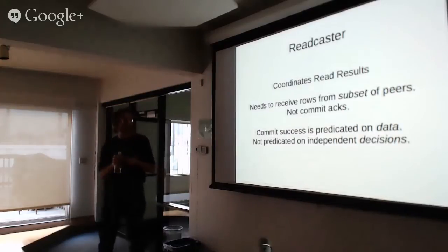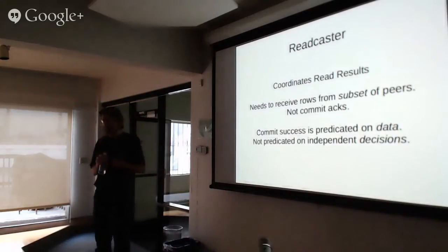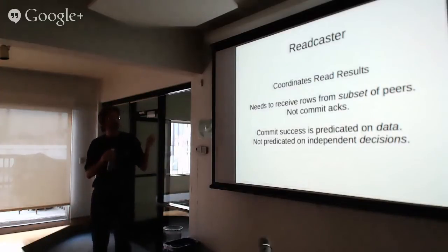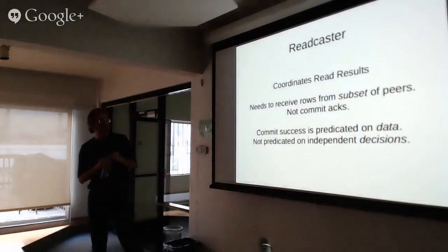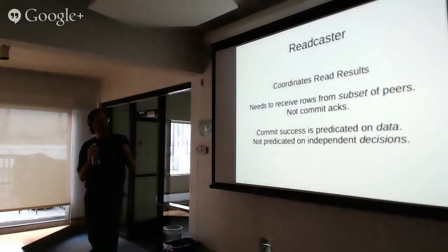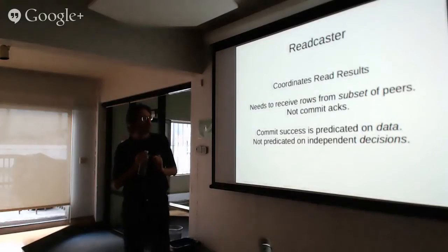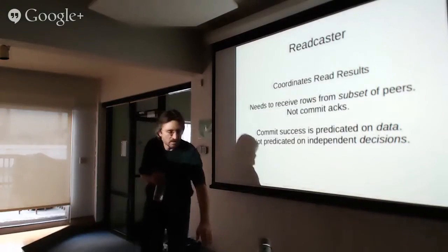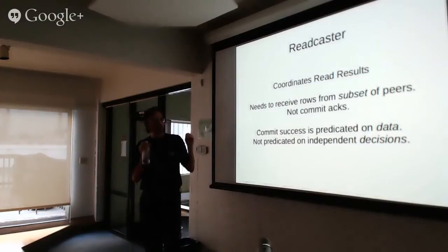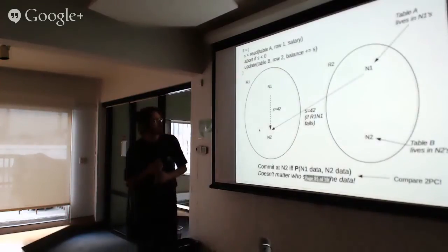The readcaster is a subcomponent of the executor that coordinates the sharing of read results between nodes involved in the transaction. The key difference from two-phase commit — this took a long time to understand — is that it's not actually trying to get a yes-no decision from other peers. It's just receiving a set of rows, and it only needs to receive rows from a subset of peers: enough data to execute the transaction. What this means is that the success of the commit is predicated on data from the database, not on independent decisions made by different actors in the system.